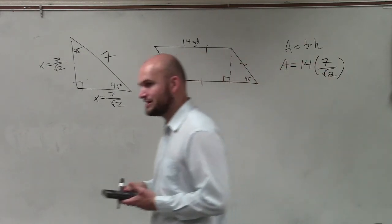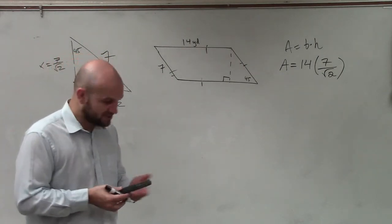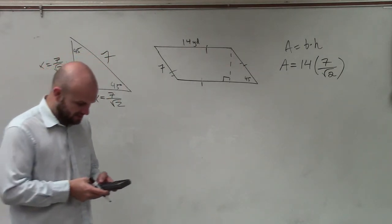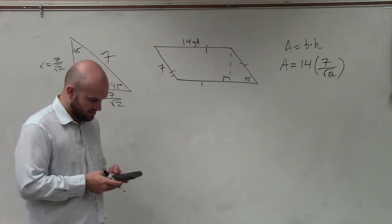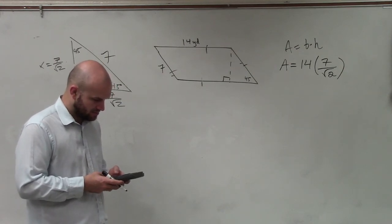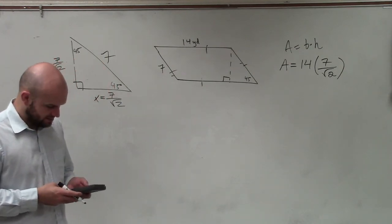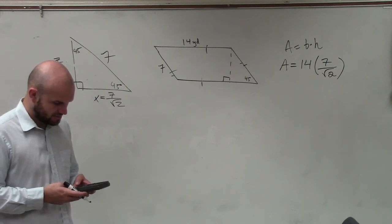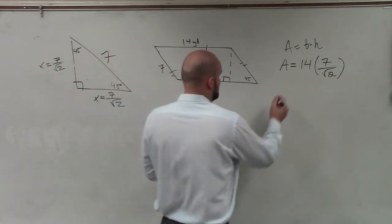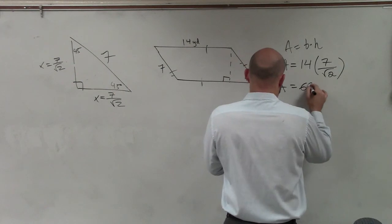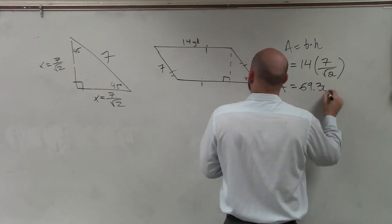I'm not going to try to simplify this to an exact answer. I'm just going to round this off, so I'm going to do 14 times 7 divided by the square root of 2. Oh! And that's going to be area equals 69.30.